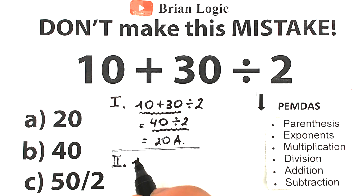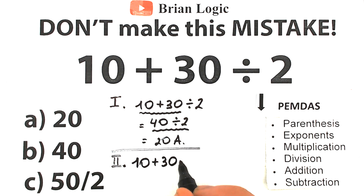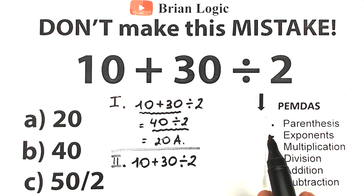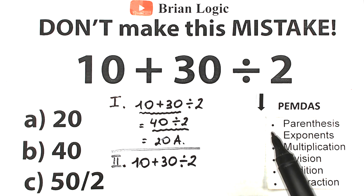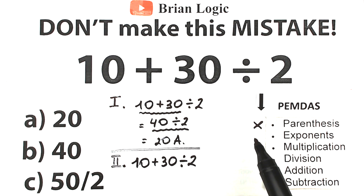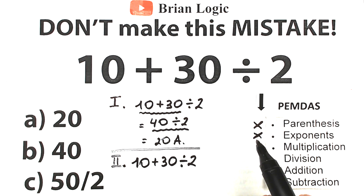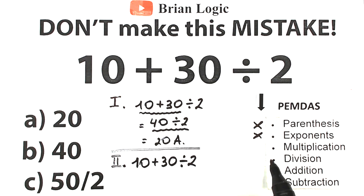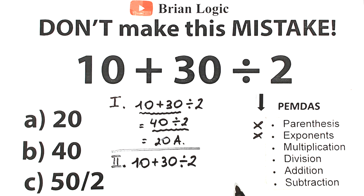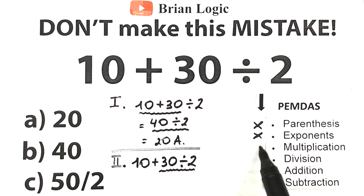Let's scan our question: 10 plus 30 divided by 2. What elements do we have? Parentheses? I don't see any, so let's skip that. No brackets, no parentheses. Exponents? Maybe cubes, 5th power, 10th power? No, I don't see any. Moving to the next step — multiplication and division group. This is one common group; a lot of students forget about it and start with multiplication only. Let's scan for multiplication and division signs. We have an addition sign — not interested in that. Right here we have a division sign, and we don't have a multiplication sign. So our first step is this division, because we don't have parentheses, exponents, or multiplication.